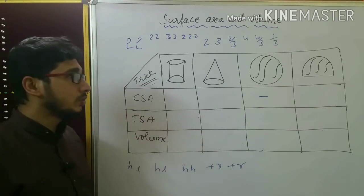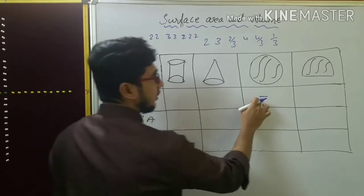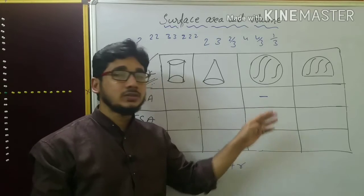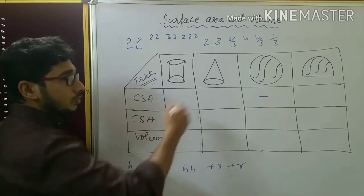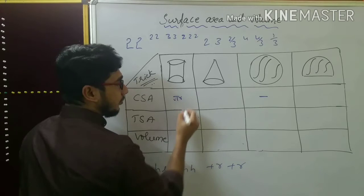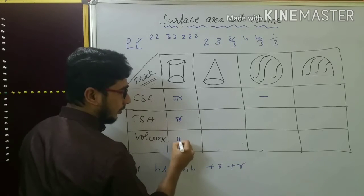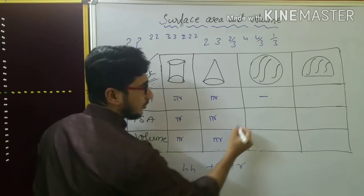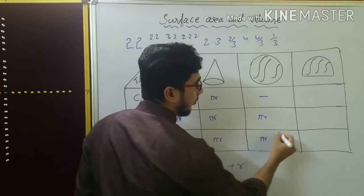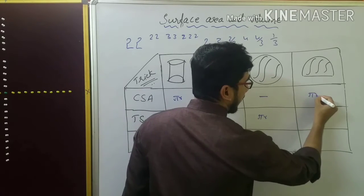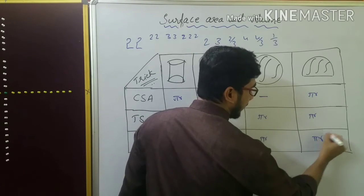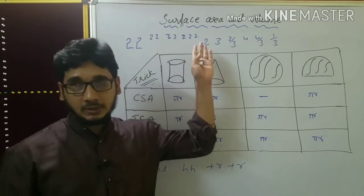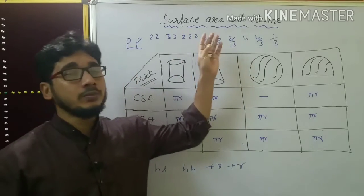First, for the sphere there is no curved surface area separately — it is all total curved surface. So for curved surface area of sphere, remove that box. Now we have to write pi r in all the remaining boxes — pi r goes everywhere in the table.